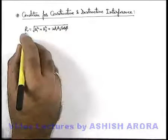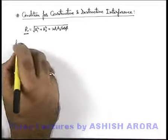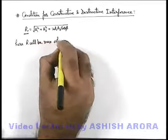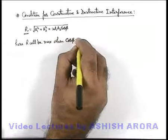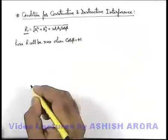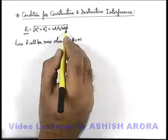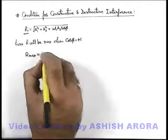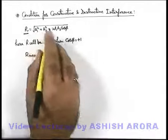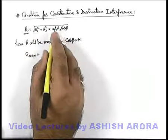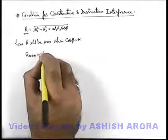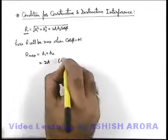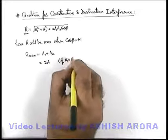If we talk about the resulting amplitude, R will be maximum when cosφ is equal to +1. If cosφ equals +1, the maximum amplitude becomes √(a₁² + a₂² + 2a₁a₂), which is the whole square of (a₁ + a₂), so the maximum amplitude is a₁ + a₂, which equals 2a when a₁ = a₂ = a.